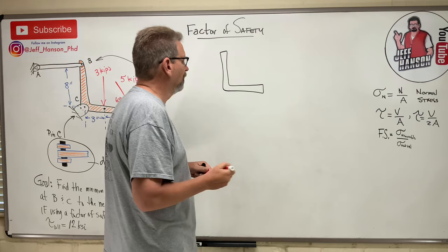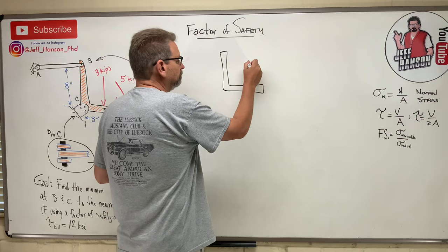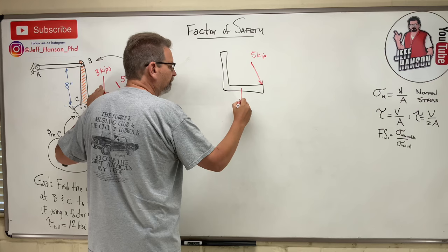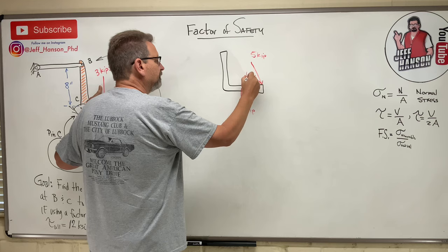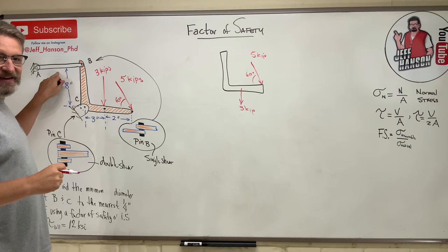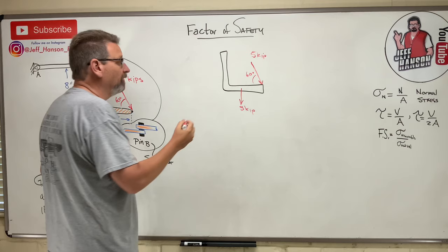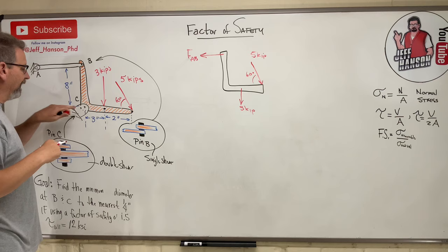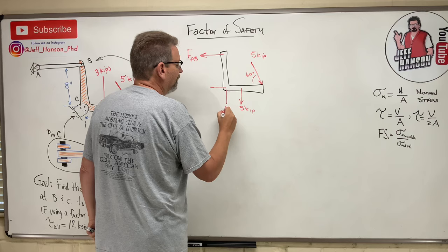The free body diagram gets the 5-kip load and the 3-kip load. This 5-kip load is at a 60-degree angle. The member up at B is a two-force member - pinned at both ends, no force in the middle - so that force is just going to be along the member. I'll call that F_AB.